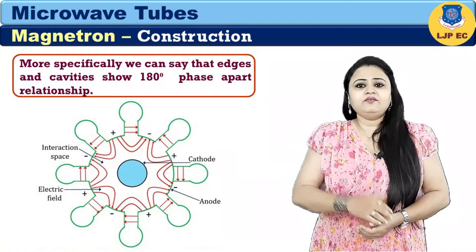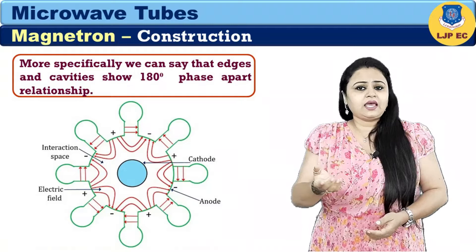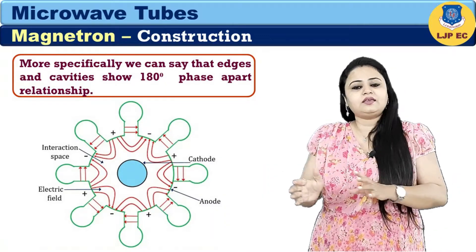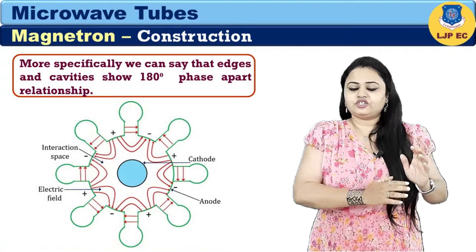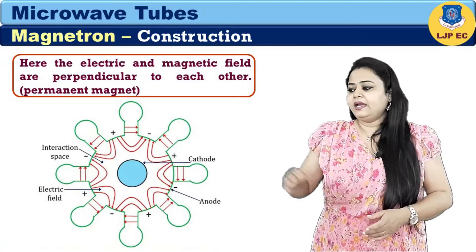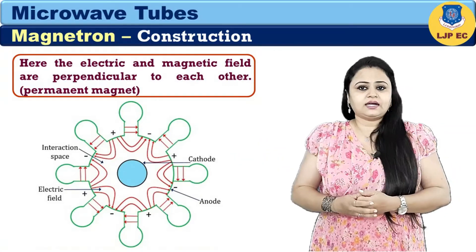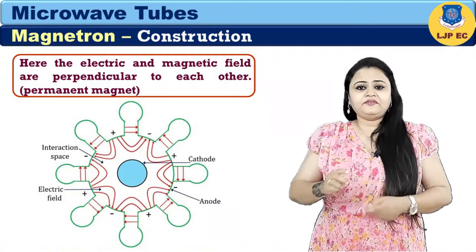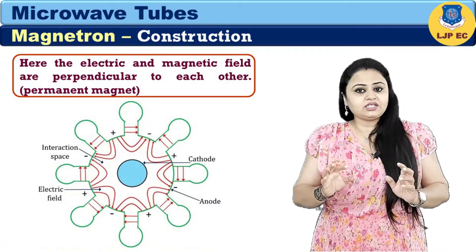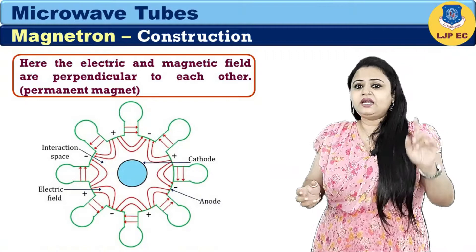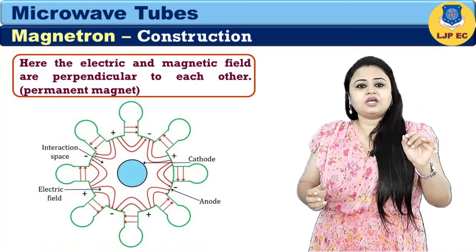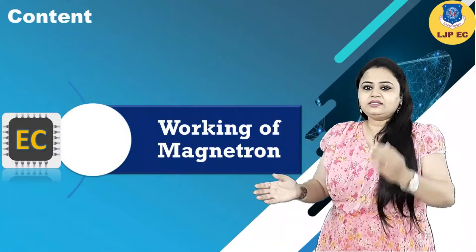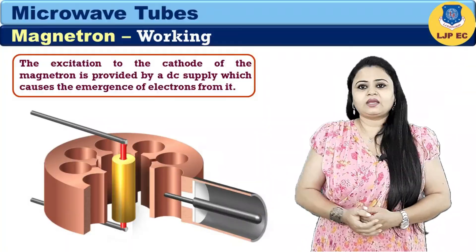More specifically, the edges and cavities show a 180 degree phase-apart relationship. As already discussed, the electric and magnetic fields are perpendicular to each other, and the magnetic field is generated by using a permanent magnet. Now let us see the working of the magnetron.